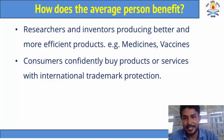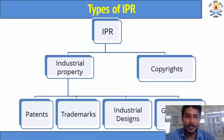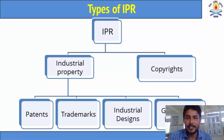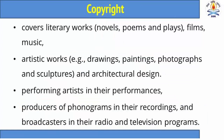So, till now we have discussed what is intellectual property, what are the intellectual property rights, what is the benefit to the IPR owner or creator or inventor, and what are the benefits to the average person. Now, what are the different types of intellectual property rights? We can broadly categorize them into two parts: one is industrial property and another one is copyright. Industrial property is further categorized into patents, trademarks, industrial design, and geographical indications. Let us start with copyright.